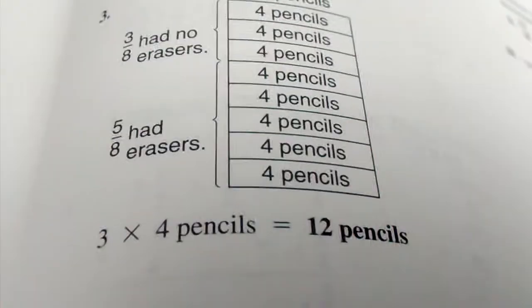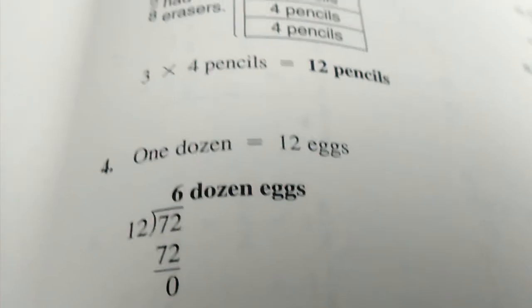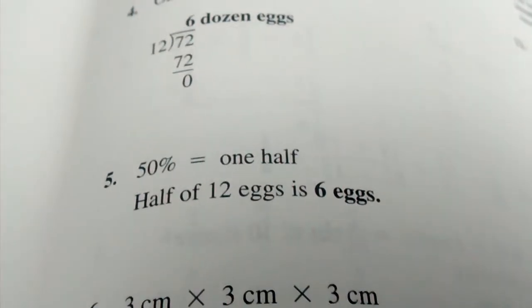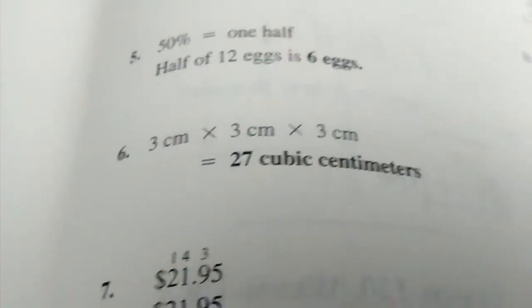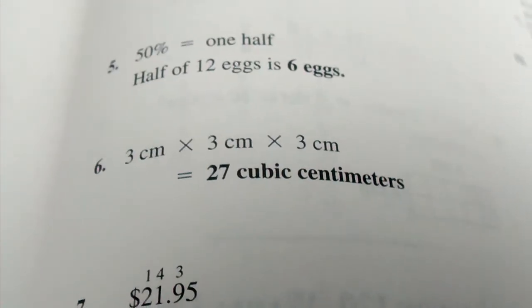3, 12 pencils. Number 4, 6 dozen eggs. Number 5, 6 eggs. Number 6, 27 cubic centimeters.